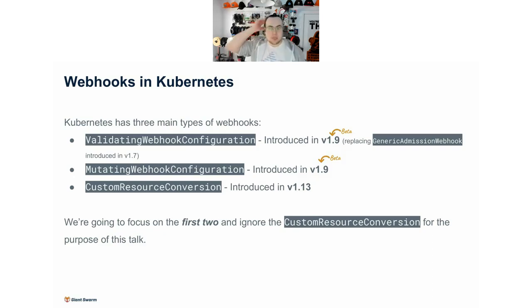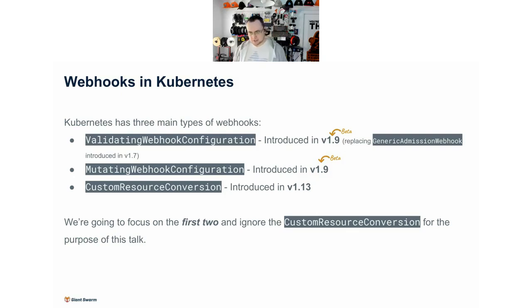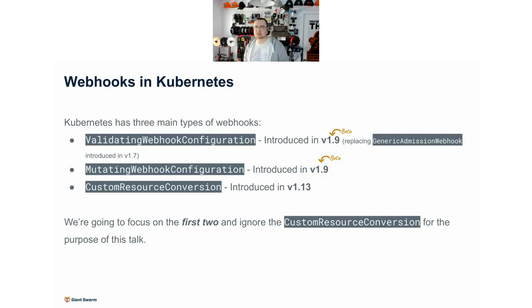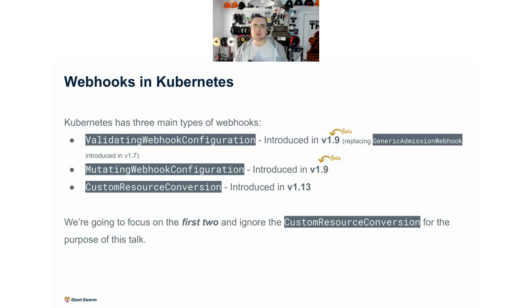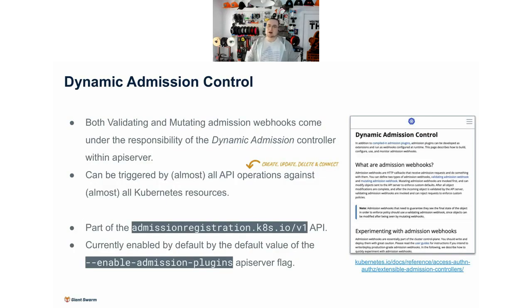For those that aren't aware, there are effectively three types of webhooks within Kubernetes: a ValidatingWebhookConfiguration, a MutatingWebhookConfiguration, and a custom resource conversion webhook. These were introduced quite early on — 1.9, 1.13, things like that — so they've been around for a while and are quite a staple of the Kubernetes project. For the purposes of this talk we're going to focus on the first two, which are grouped under dynamic admission controllers.